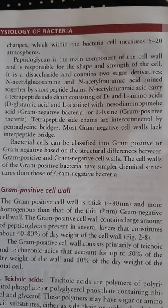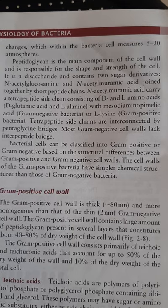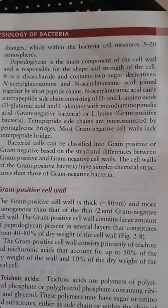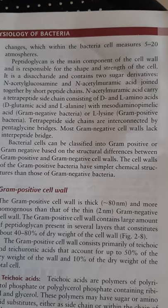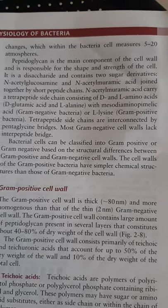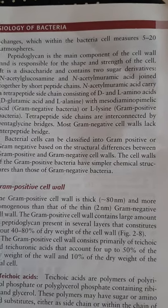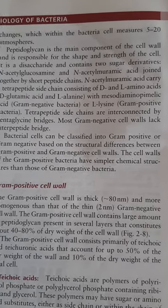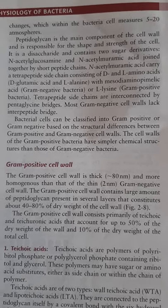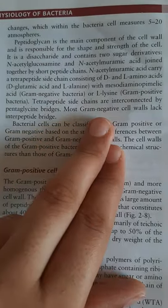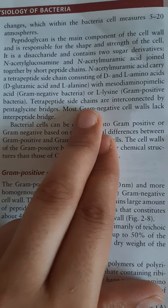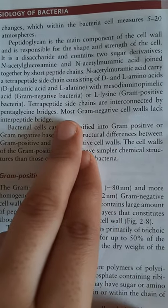Peptidoglycan is a disaccharide and consists of two sugar derivatives: N-acetylglucosamine and N-acetylmuramic acid. It has side chain D and L amino acids. There are two disaccharides combined with D-glutamic acid and L-alanine.